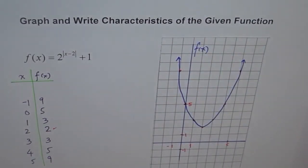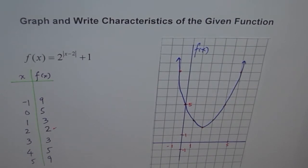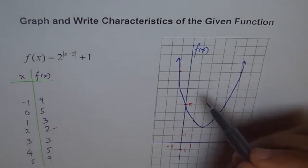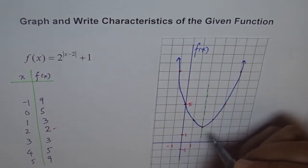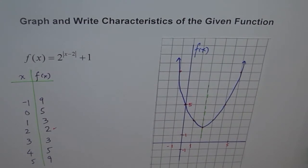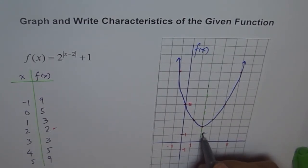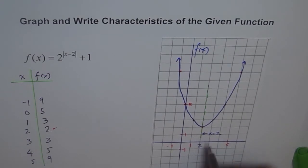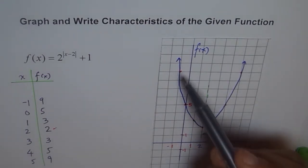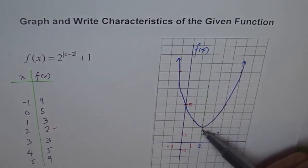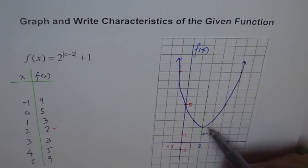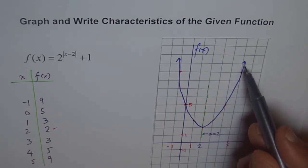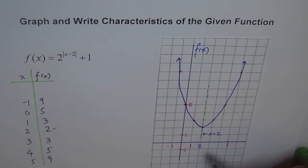Looking at characteristics: there is a line of symmetry at x equals 2. The function is decreasing from negative infinity to 2, and increasing from 2 to positive infinity. The function is always positive.